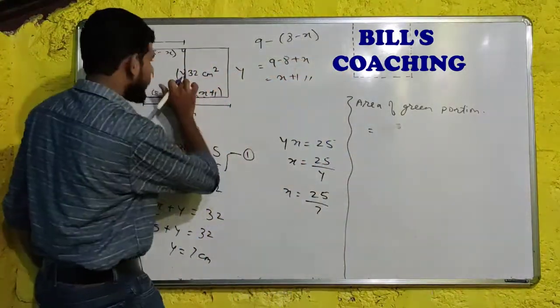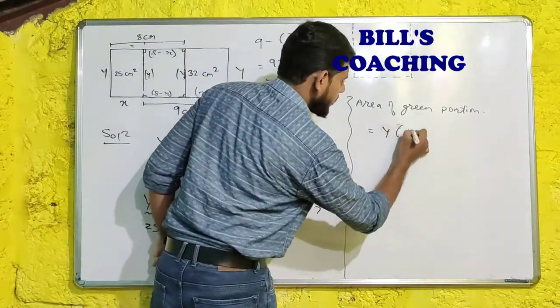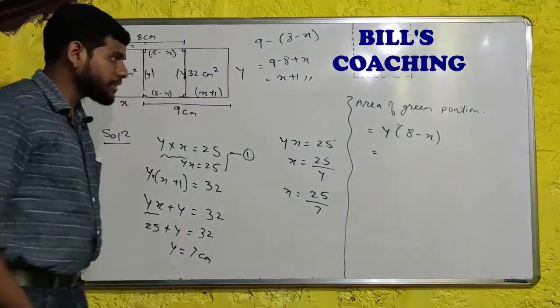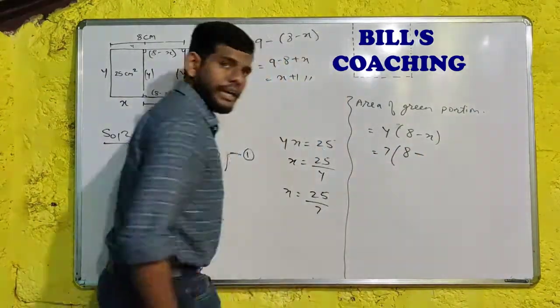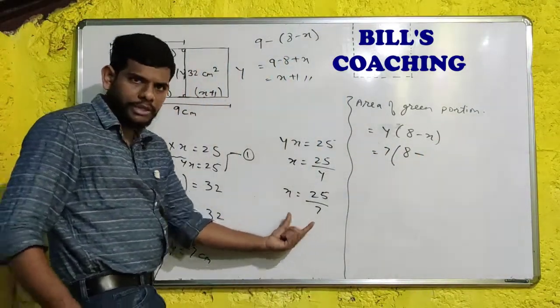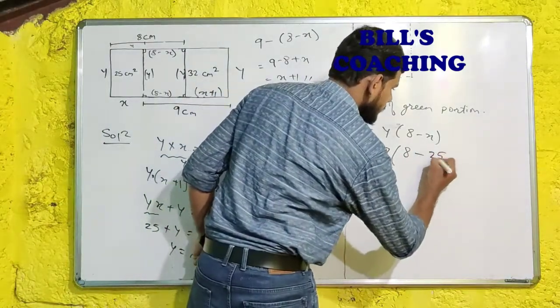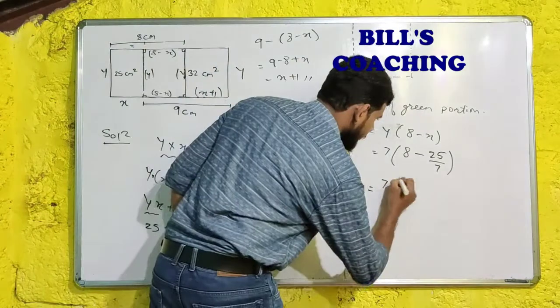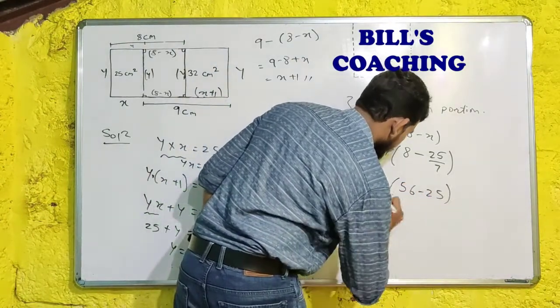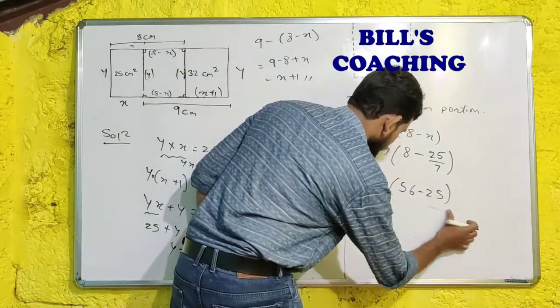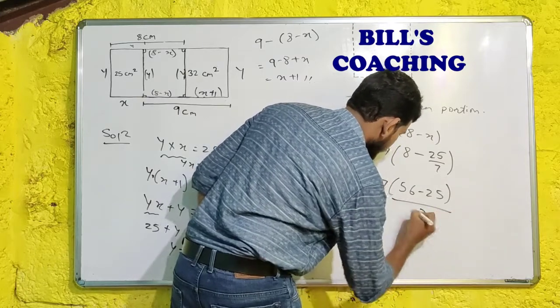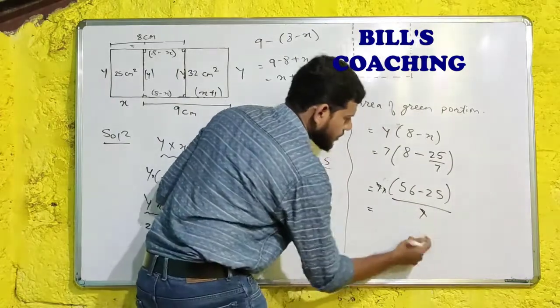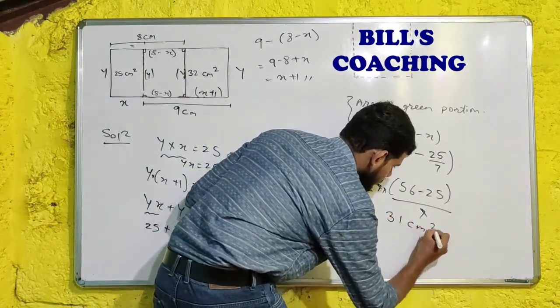Now, last part is remaining. What is area of this? Length into breadth. This is this side, this will be y. This is y. This is 8 minus x. So the green portion will be equal to 8 minus x. Let me write y first. Y multiplied by (8 minus x). So what is y? Y is 7. 8... x we have calculated over here, 25 upon 7. So after solving we will get 7 into (56 minus 25) upon 7.